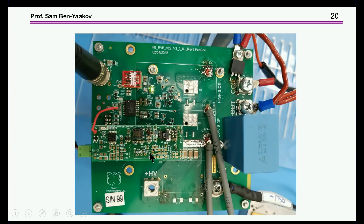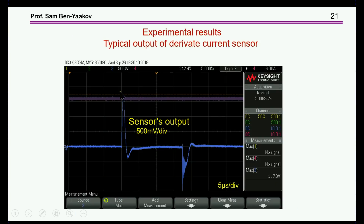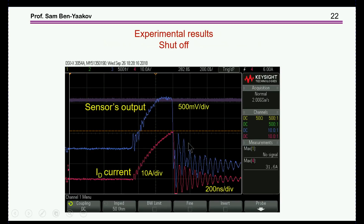The test setup uses a half-bridge demo board with two GAN transistors and the test sensor. The actual output of the sensor closely matches what was seen in simulation — the leading edge and the trailing edge. More interesting is the picture showing the circuit responding to an overcurrent event: the current builds up (20 nanoseconds per division), and at approximately 30 amps the sensor reaches its trip point, reacts, and turns off the unit with a very fast response.